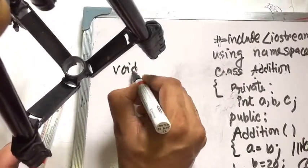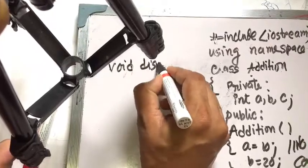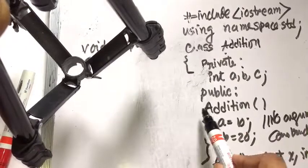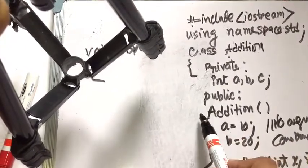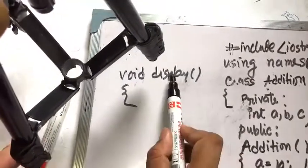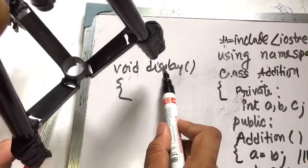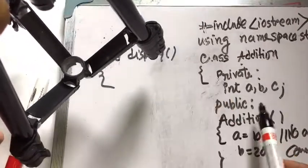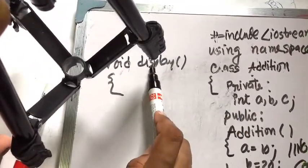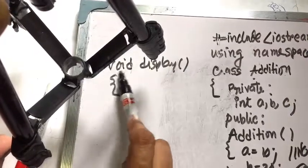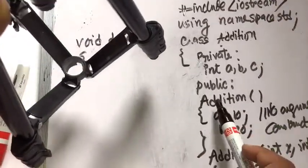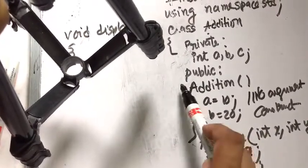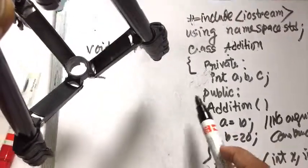There is another function: void display. You can observe that 'addition' has no return value, not even void — just simply 'addition'. But 'display' has a return type void, so display is a normal member function, not a constructor. Constructor cannot return anything, not even void.